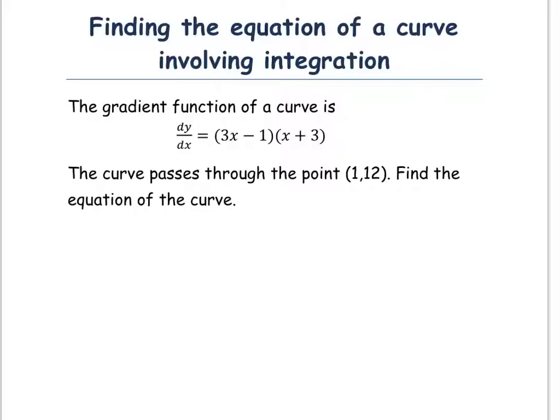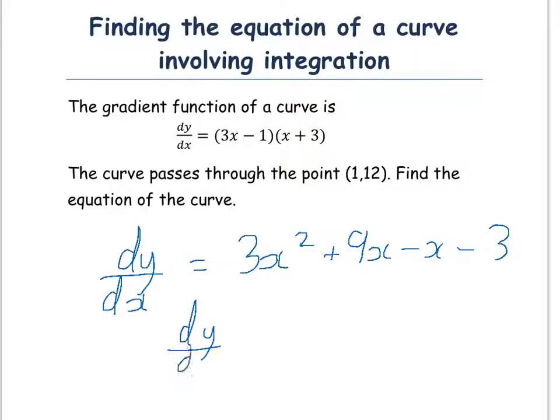dy/dx is equal to: 3x times x which is 3x squared, 3x times 3 which is 9x, minus 1 times x which is minus x, minus 1 times 3 which is minus 3. Now you can collect together the plus 9x and the minus x, so 3x squared plus 8x minus 3.